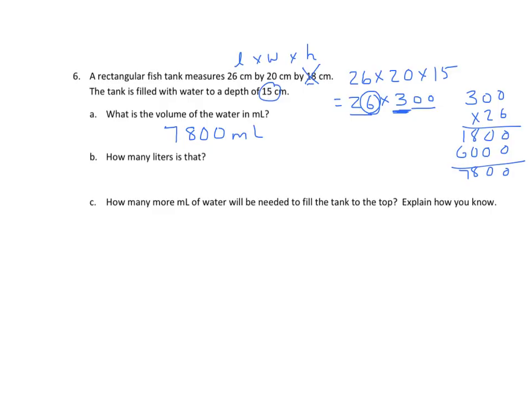How many liters? Well, that's 7,800 times 1 milliliter equals 7,800 times 1,000th of a liter. And that becomes, I'll draw an arrow, is 7,800 divided by 1,000, and that is 7.8 liters.